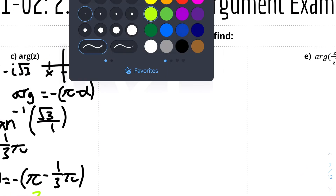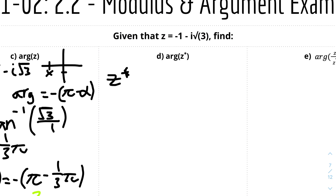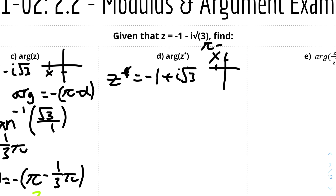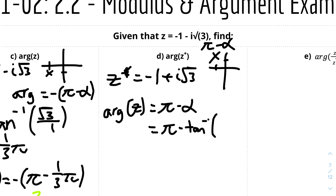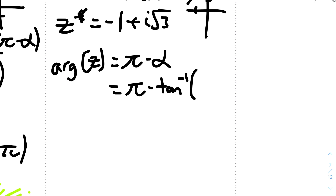Now find the argument of z asterisk, the conjugate of z. The conjugate z asterisk equals minus 1 plus i root 3. This lies in the second quadrant, because the real part is minus 1 and the imaginary part is positive root 3. Therefore the argument is pi minus alpha, which is pi minus tan inverse of root 3 over 1. Since tan inverse of root 3 is pi over 3, we get pi minus pi over 3, which equals 2 pi over 3.